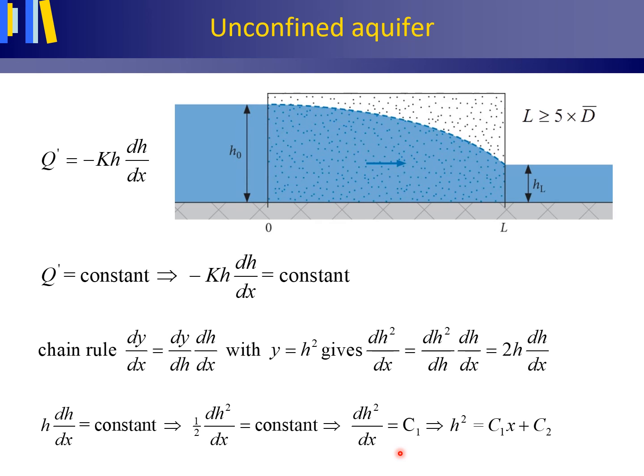When we integrate this, we get H² equals C1x + C2. This is the equation for the potentiometric surface for steady groundwater flow in an unconfined aquifer between two parallel fully penetrating canals with different water levels. Because H is to the power 2, this equation is a parabolic one.